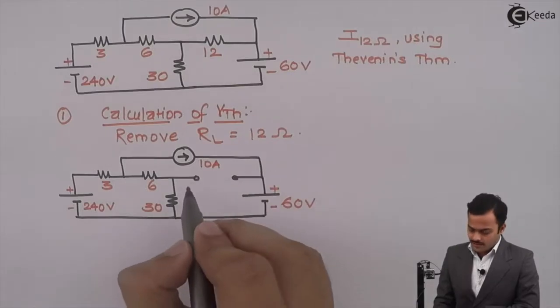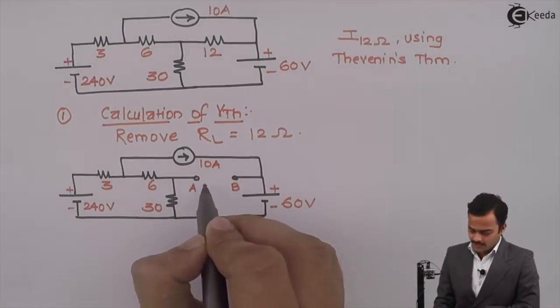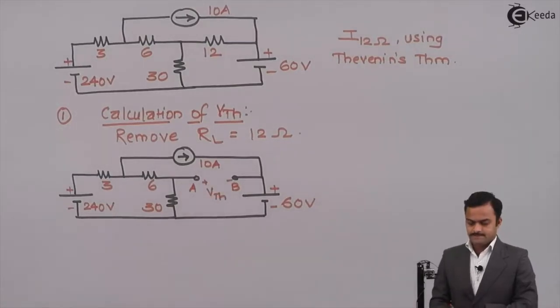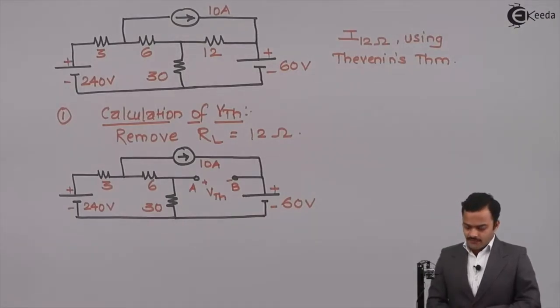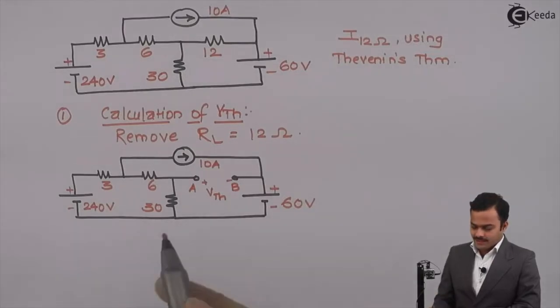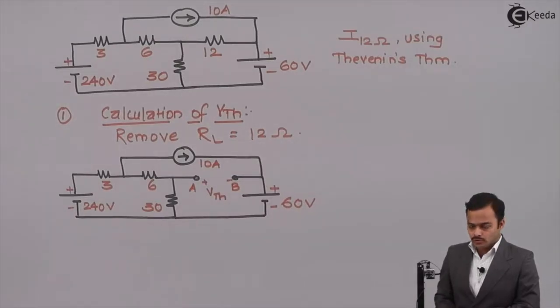We remove RL leaving behind two terminals A and B across which we are supposed to find out Thevenin's voltage. Once again, we are going to use Kirchhoff's current law or nodal analysis in order to get voltage here. For that we need to identify the nodes.